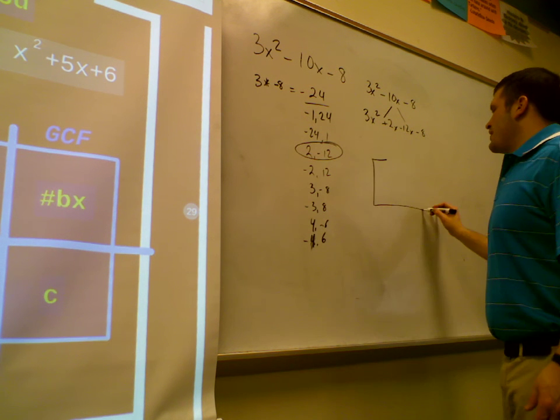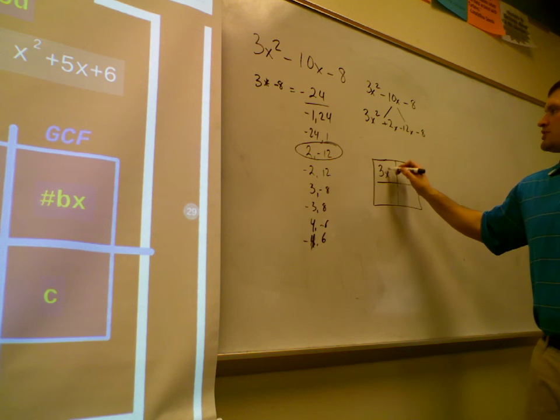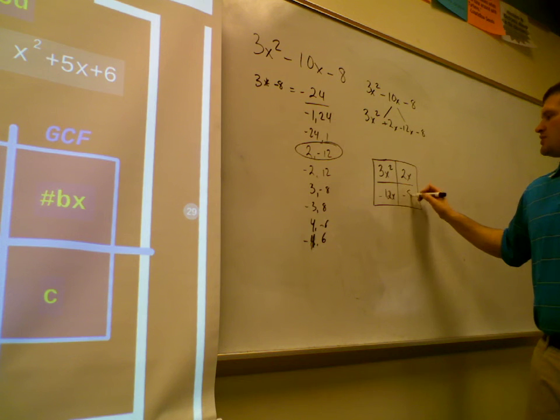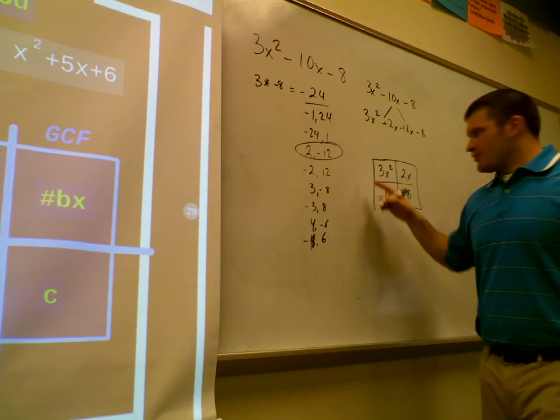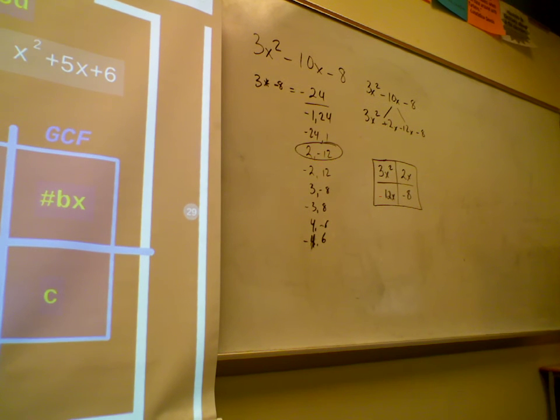Then, next we box. 3x squared, 2x, negative 12x, negative 8. Why don't you take a moment. I want you to find the GCFs of each column and each row.